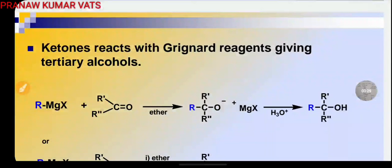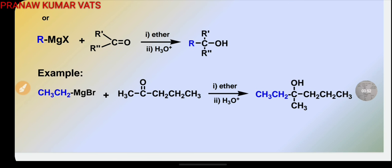When it is treated with ketone, then it gives tertiary alcohols. For example, RMgX on reaction with R'COR'' in the presence of ether gives RCR'R''OMgX. H3O+ is giving tertiary alcohol. Here is an example: CH3CH2MgBr, ethyl magnesium bromide, on reaction with...